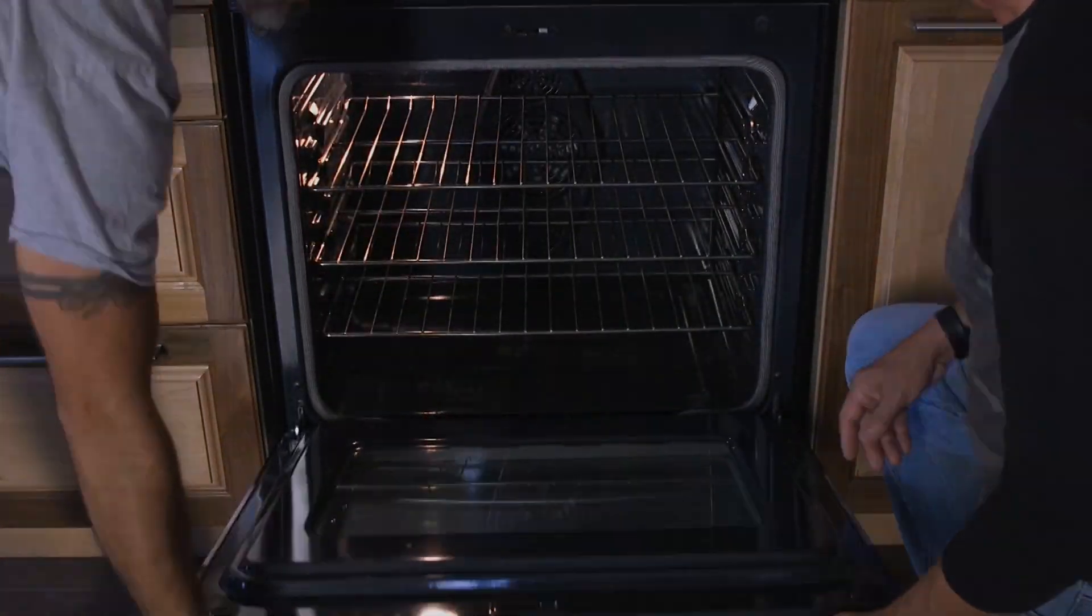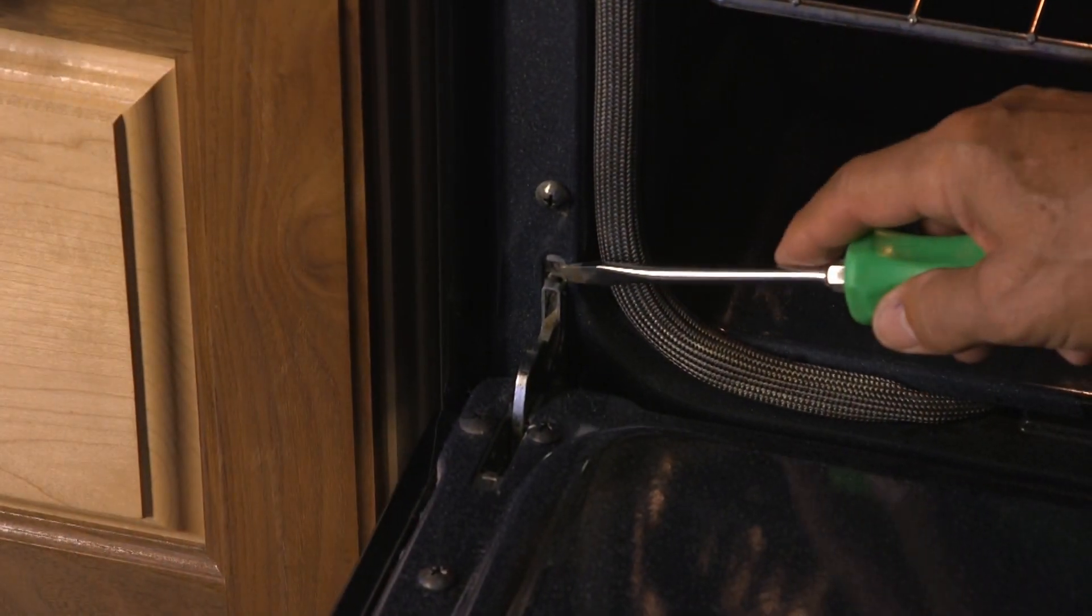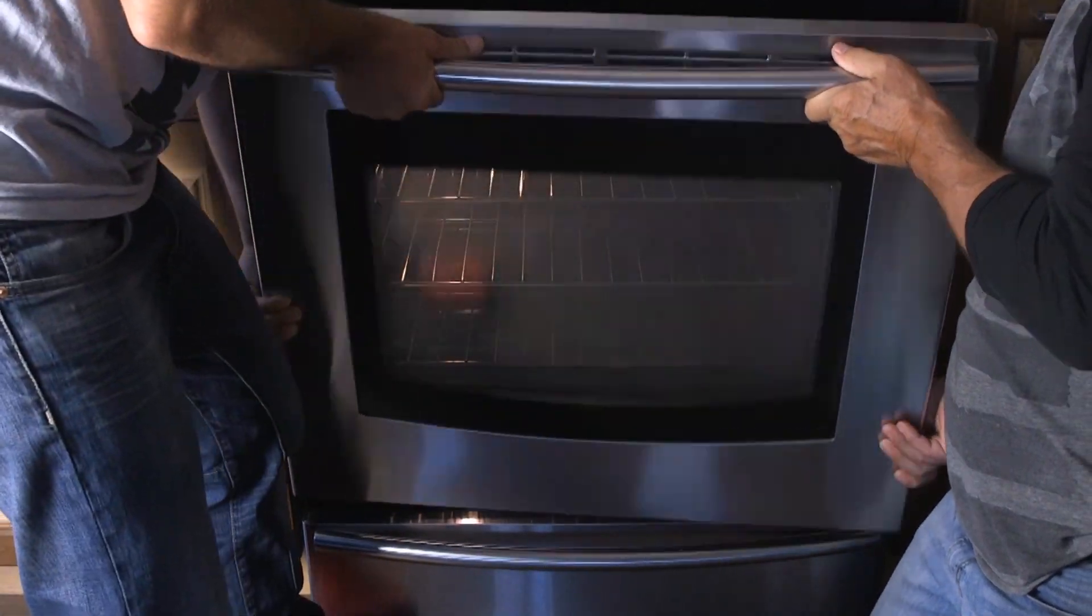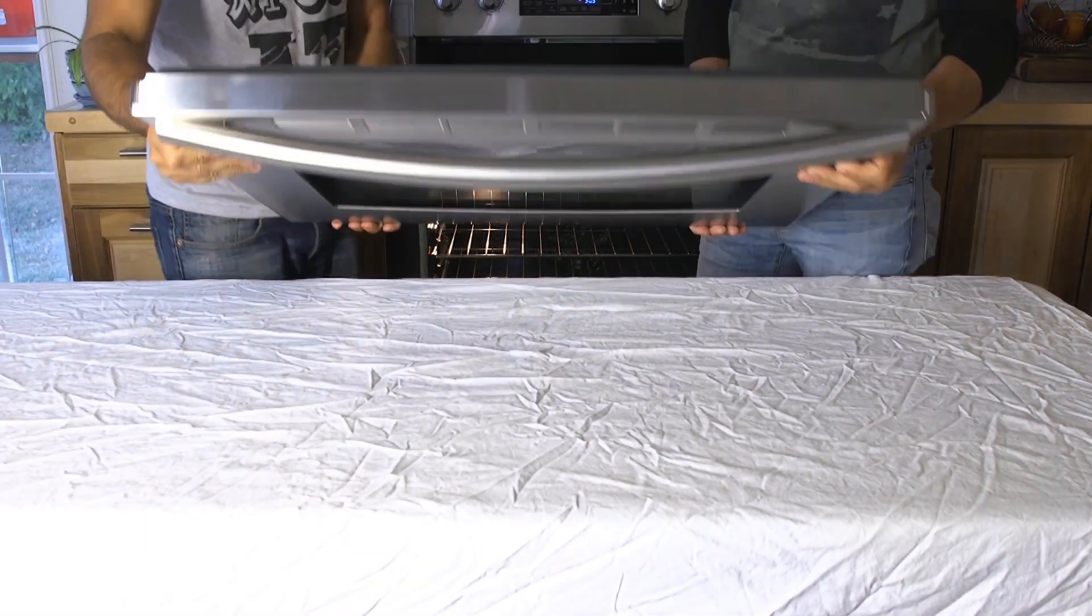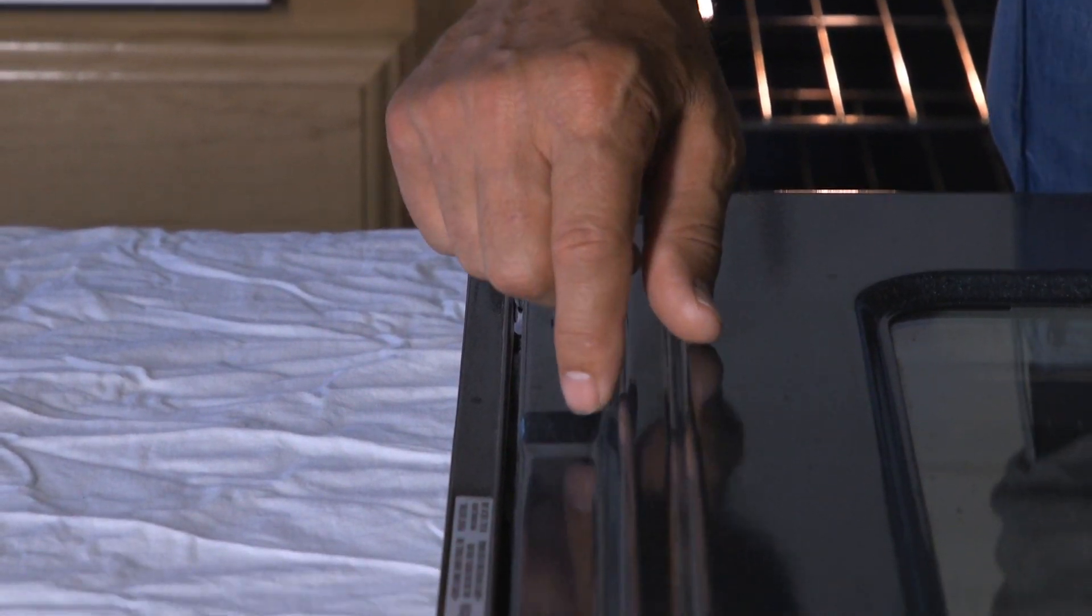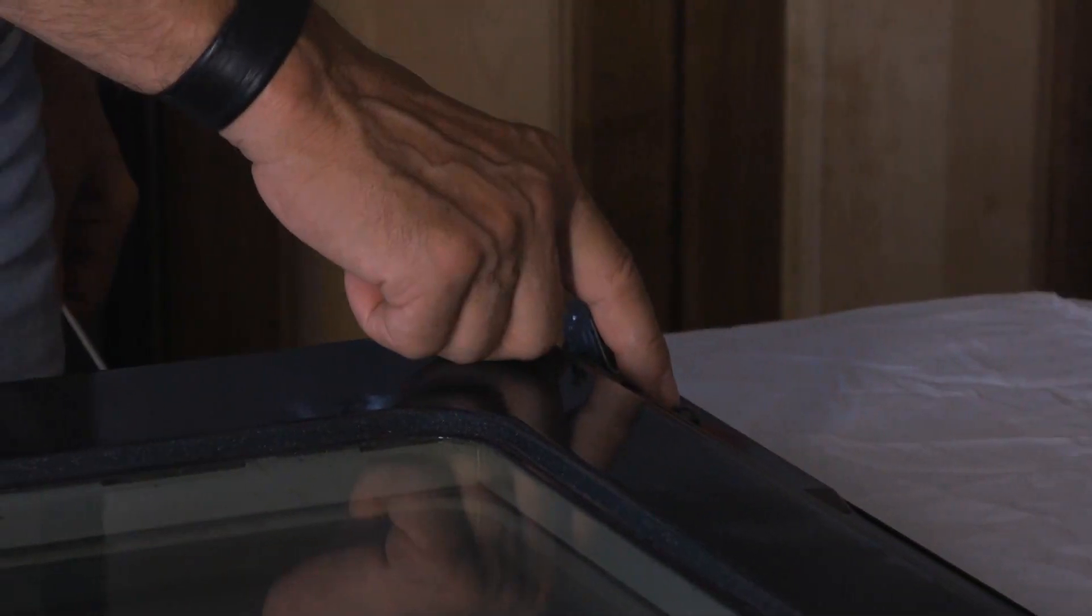The first step is to remove the door. Flip over the locks located on both bottom hinges with a screwdriver. Then lift the door at around 80 degrees to pull the hinges out of their slots. Once you remove the door, place it on a flat working area. Make sure you can work around your door.